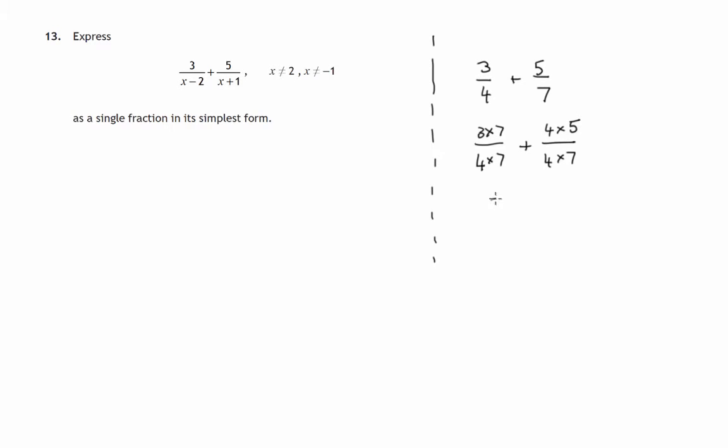because it's 21/28 plus 20/28. They're both 28, which means I can now add them. When I've got the same denominator, there's 21 of them plus 20 of them, that's 41/28, and I've got a single fraction.